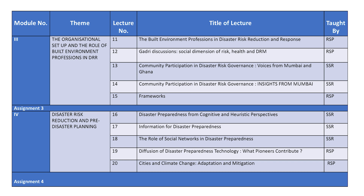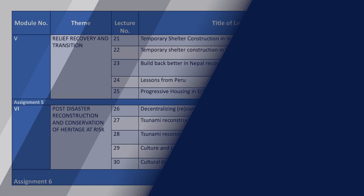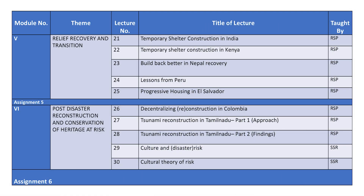The fourth module is on Disaster Risk Reduction and Pre-Disaster Planning, which covers disaster preparedness, cognitive and heuristic perspectives, and the role of social networks. The fifth module is on Relief, Recovery, and Transition, covering temporary shelter and the transition phases of DRR.